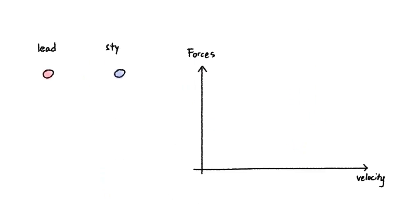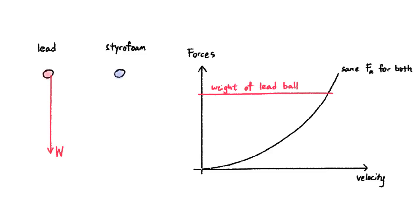Let's compare dropping a lead ball and a styrofoam ball of the same dimension. Because they have the same dimension and shape, they experience the same air resistance for the same speed they are falling. But because the lead ball has a larger weight, it can accelerate to a higher speed before the upward air resistance matches its downward weight.